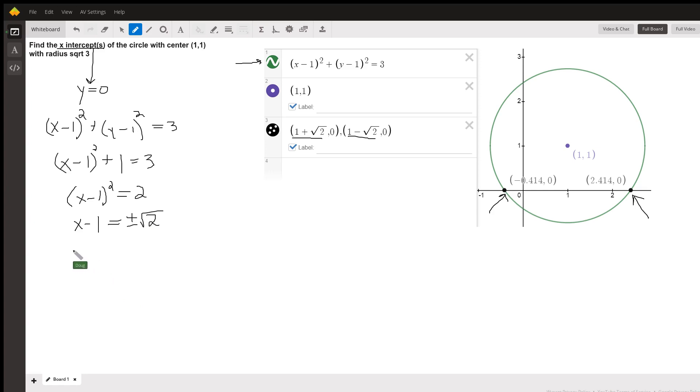And now when we solve for x, we add 1 to both sides. And there are the values for the two x-intercepts: 1 plus the square root of 2 and 1 minus the square root of 2.